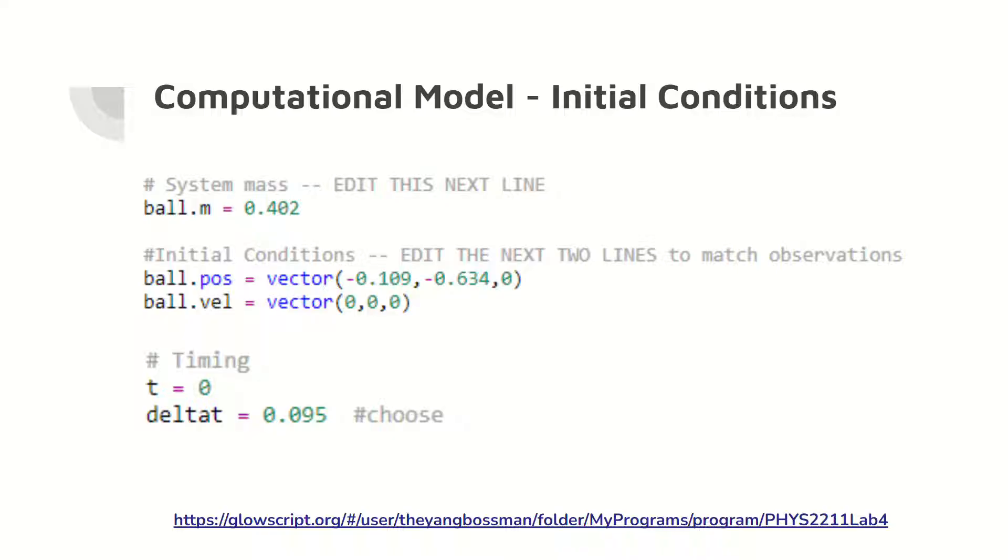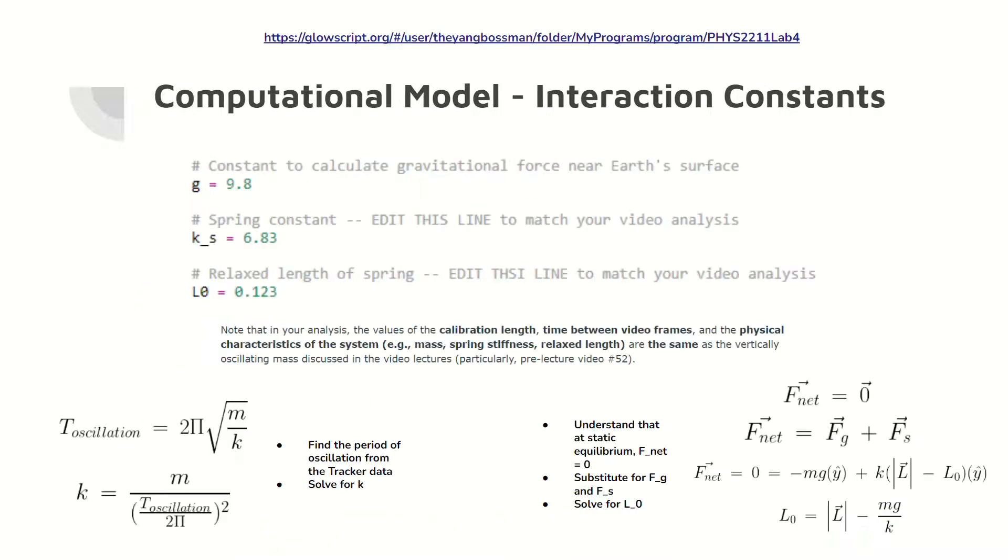Here are the initial conditions for the computational model, which were derived from the initial conditions presented in tracker on the previous slide. Here are the interaction constants of the model. We are told that the spring constant k and the relaxed length L0 for the spring can be found in pre-lecture video 52. So the values in the code are from that video. However, the equations and steps to calculate the spring constant and the relaxed length are shown at the bottom of the slide. Note that the spring constant can be determined from the oscillation period.